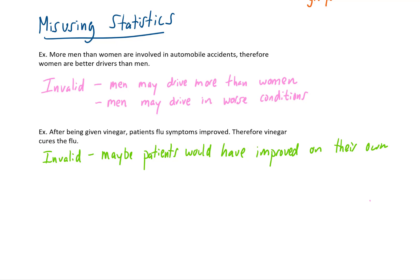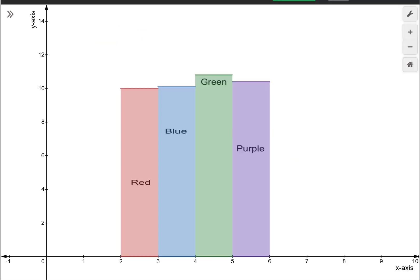For the last group of problems in this section, we look at graphs and how they can be a little bit misleading sometimes. Here's an example. Here's a bar graph whose scale on the y-axis goes from 0 to 14. And you can see that most of the data is clustered somewhere around the 10 range. Looking at this graph this way, it doesn't look like there's a lot of variety in the data values.